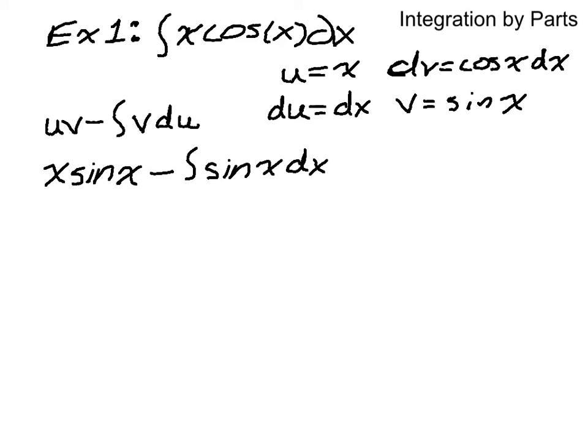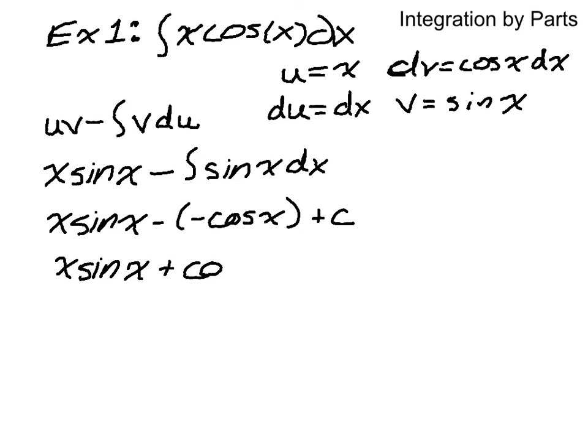And then I can integrate that, x sine of x minus, the integral of sine is negative cosine of x, and then I'll put it plus c. So I get x sine of x plus cosine of x plus c, which is my final answer on that.